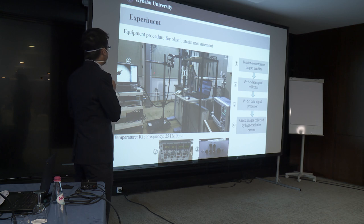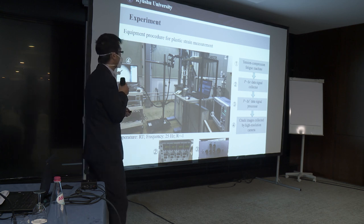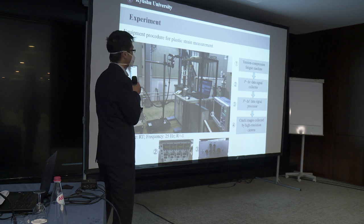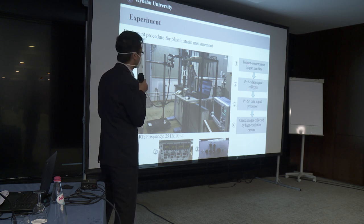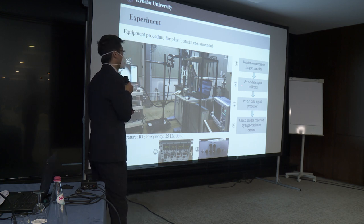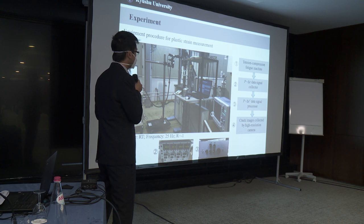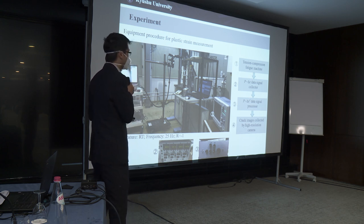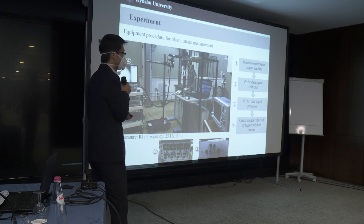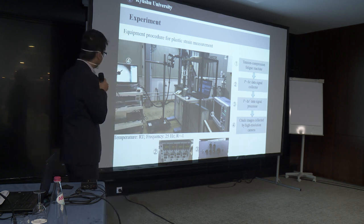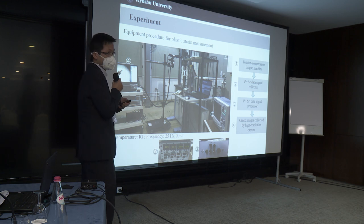And the experiment procedure is designed as follows, which includes four main steps. First, to do a tension compression test and collect the stress and the total strain data information and use a device to make a data process to get plastic strain information. And of course, use the high resolution camera to observe the crack propagation images.